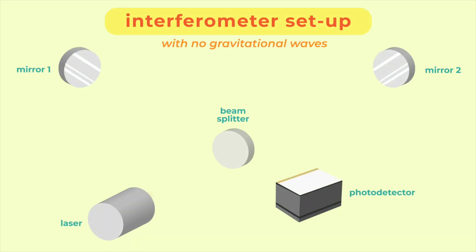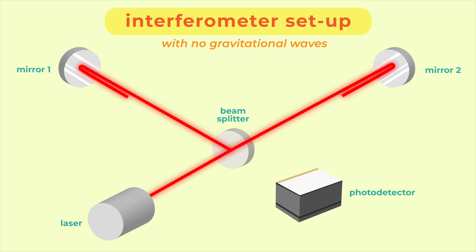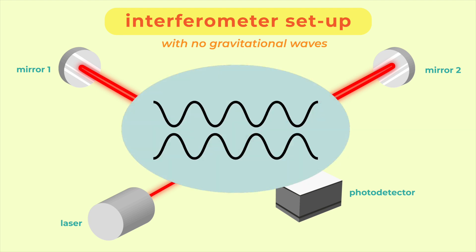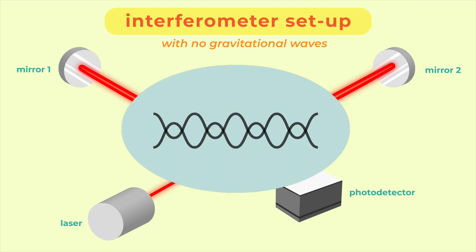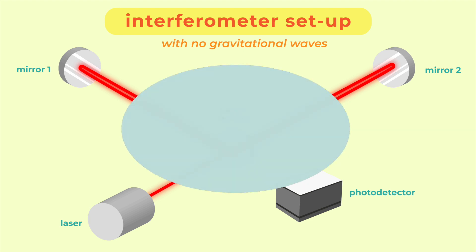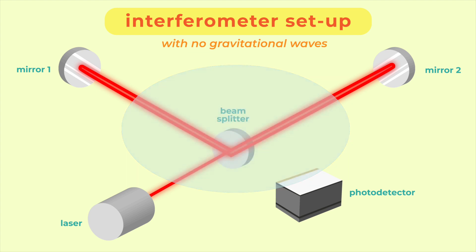With no gravitational waves, the laser beams are reflected at the same distance back towards the center, with no light beam visible at the photodetector. Why? The waves are rearranged in such a way that they cancel each other out, leaving no energy behind.